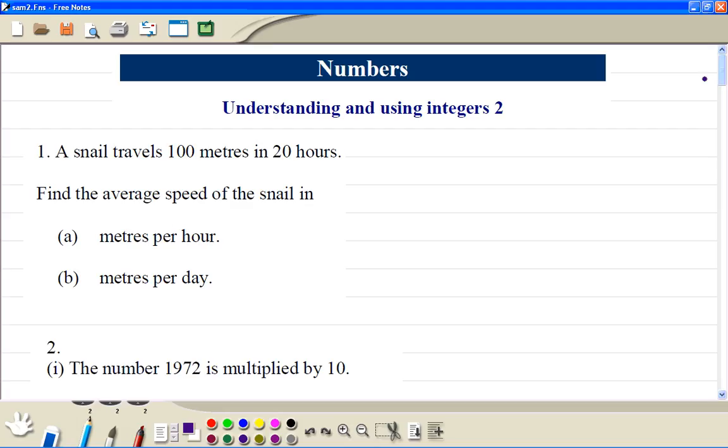Let's do question 1, part A. So you have 100 meters, then you can divide by 20. 10 divided by 2 is 5, so it's 5 meters per hour. Per day, then you have to multiply 5 by 24, which is 120 meters per day.